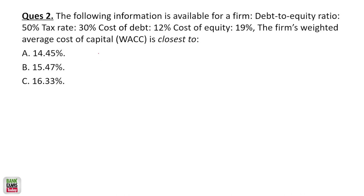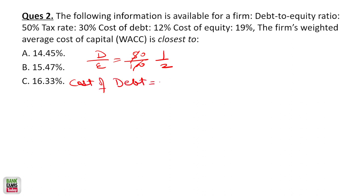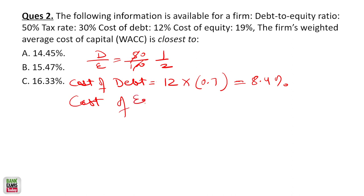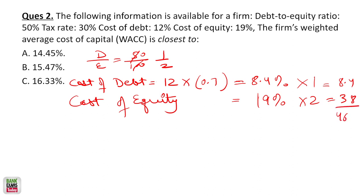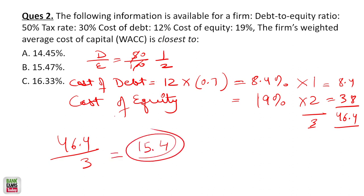Numerical 2: Debt-to-equity ratio = 50%, meaning if debt is 1, equity is 2. Cost of debt = 12%, apply tax benefit: 12% × 0.7 = 8.4%. Cost of equity = 19%. Weighted sum = (8.4 × 1) + (19 × 2) = 8.4 + 38 = 46.4. Total weight = 3. WACC = 46.4 / 3 ≈ 15.47%.